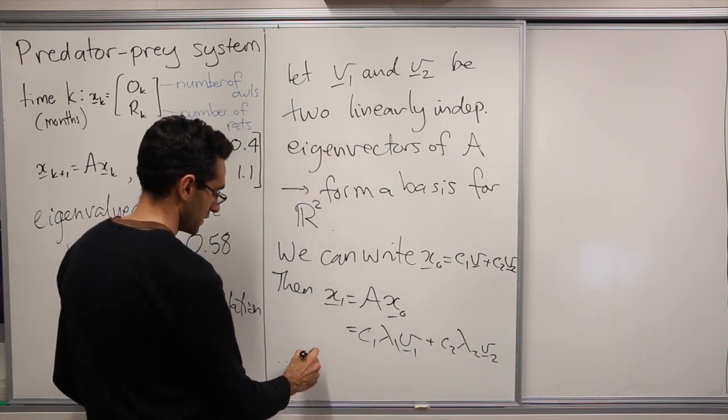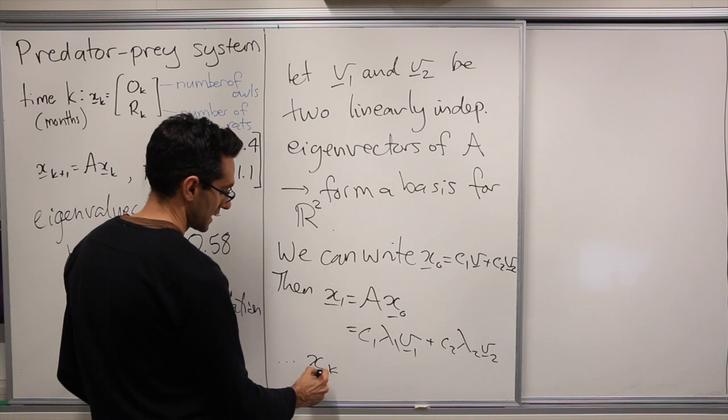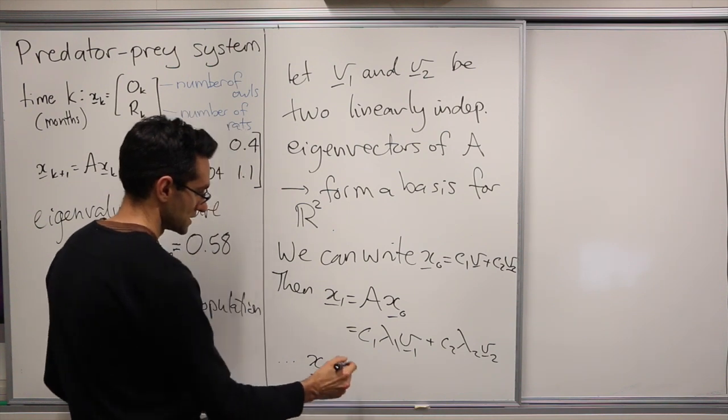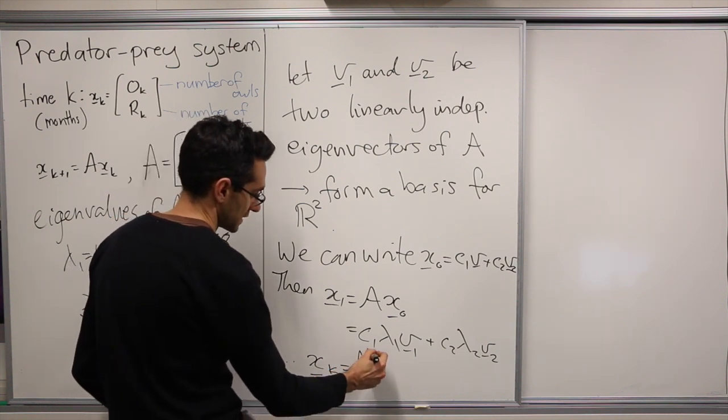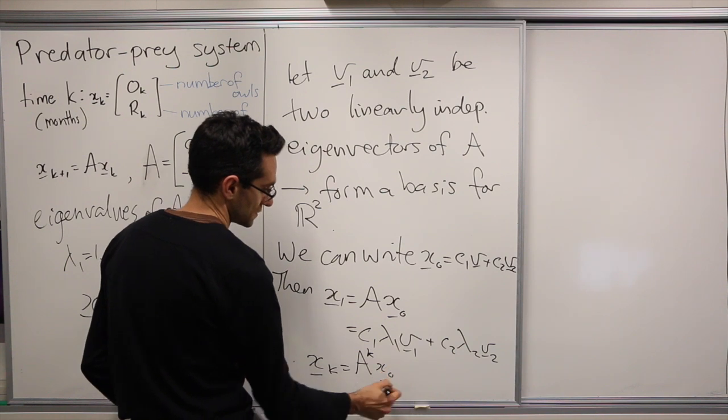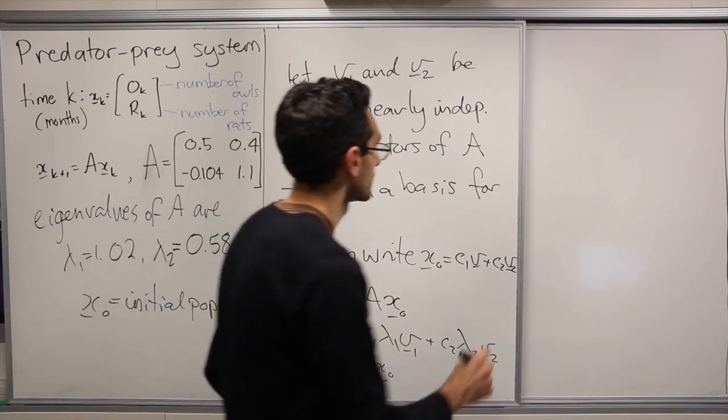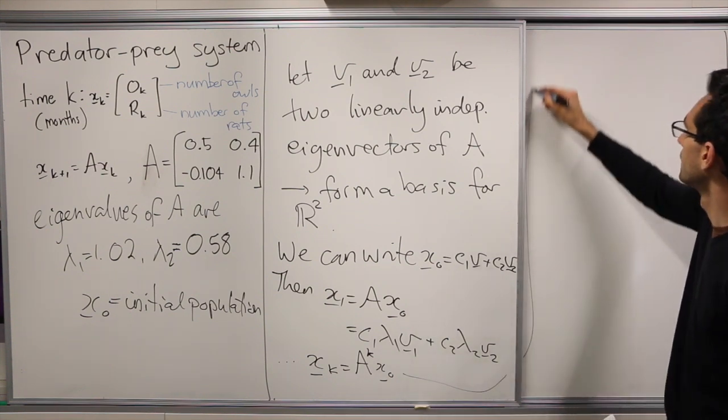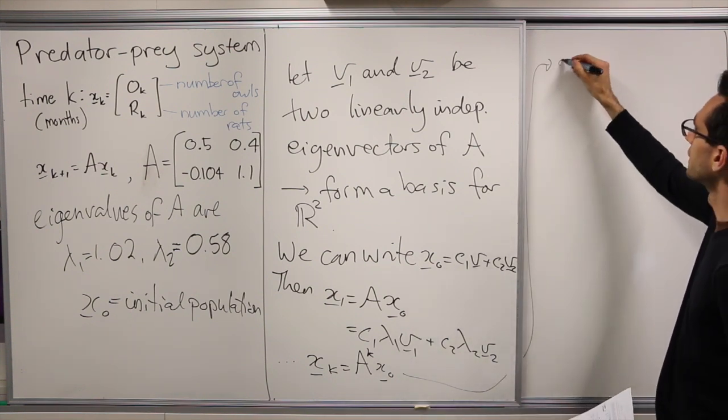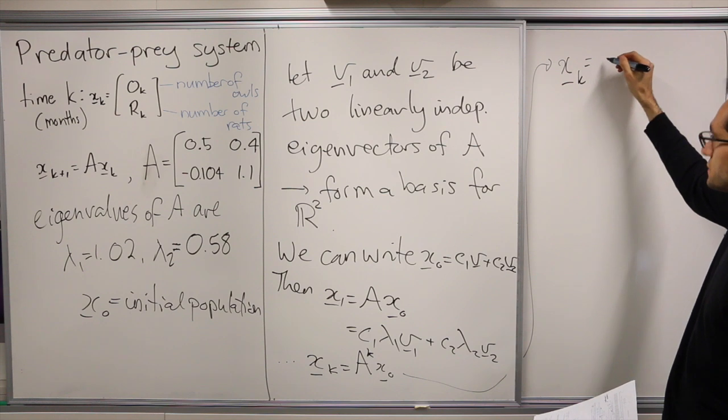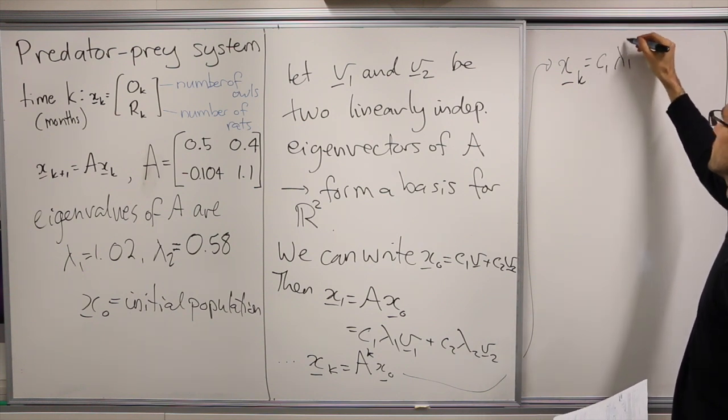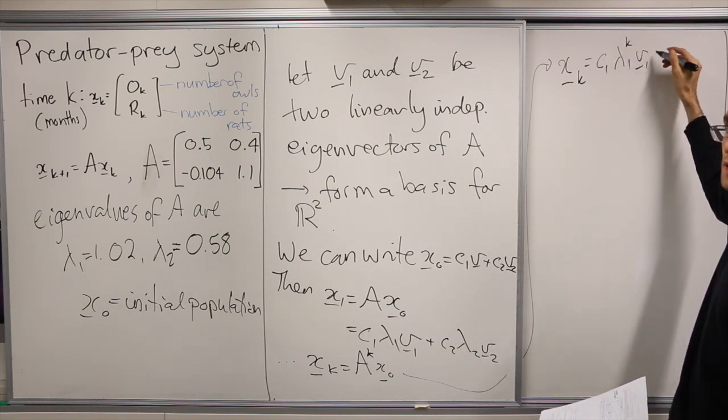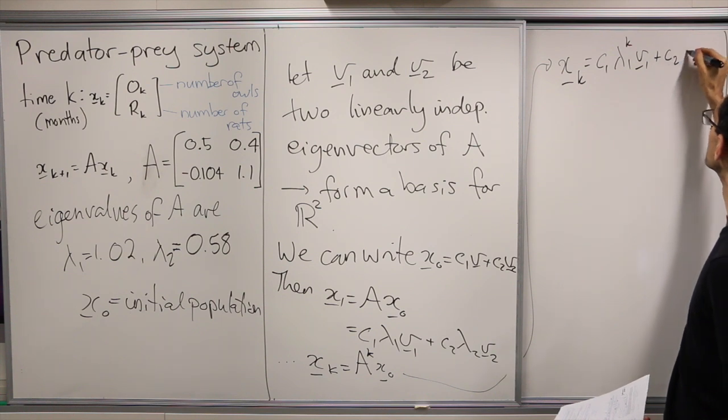And the general term, we take xk, which is A^k·x0. We have xk is going to be c1·lambda1^k·v1 + c2·lambda2^k·v2.